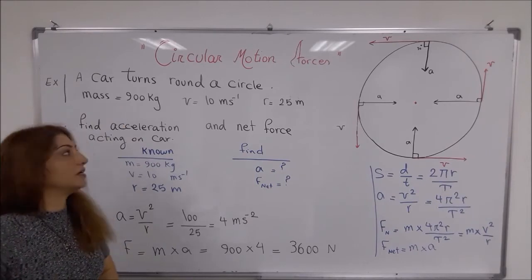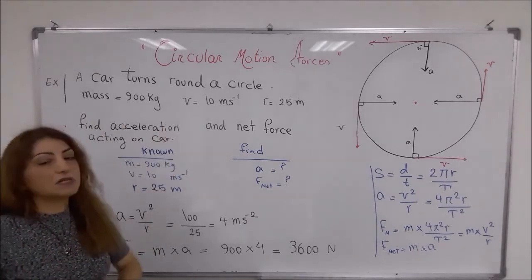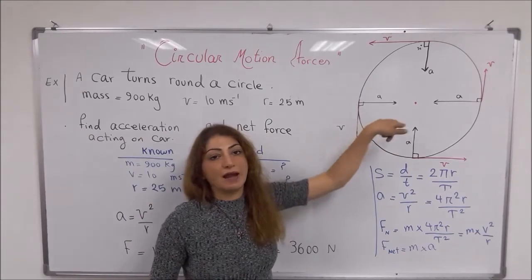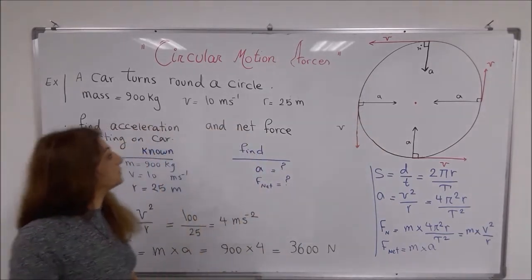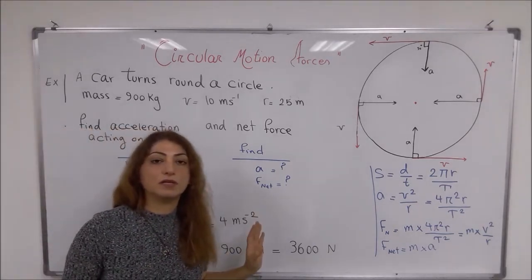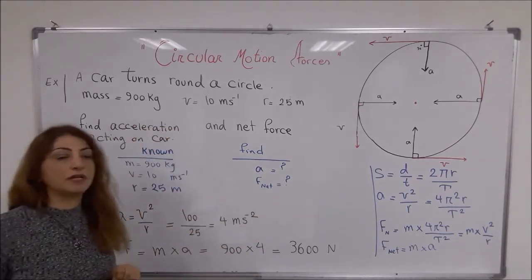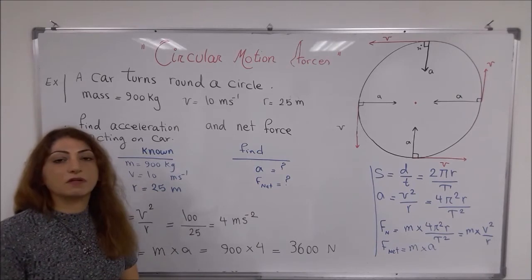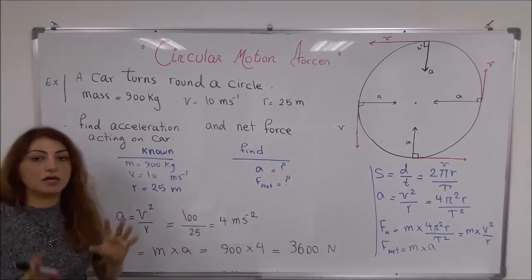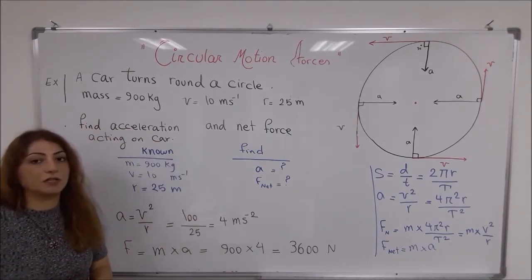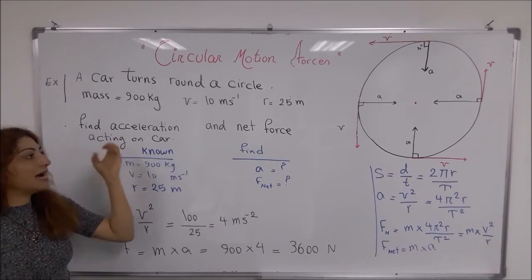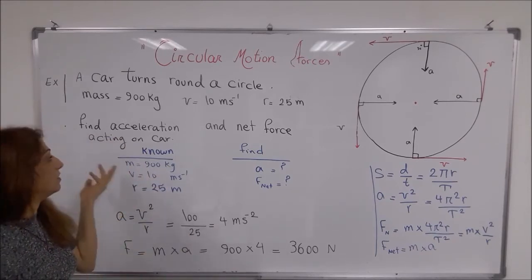The radius of the circle that the car is moving around is 25 meters. The units do not need to be converted because they are already in the correct form: mass in kilograms, velocity in meters per second, and radius in meters. What you have to do is first find the acceleration and then find the net force acting on the car.